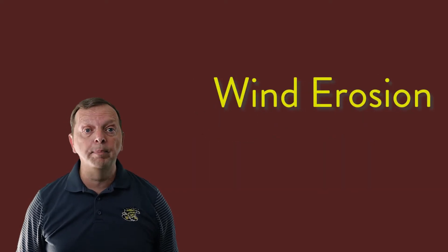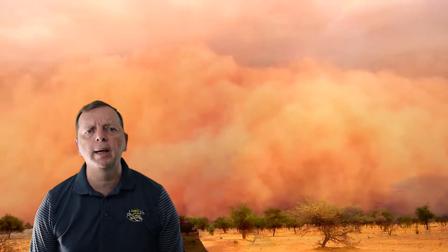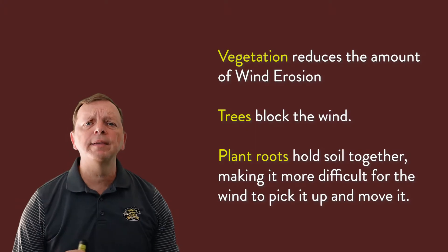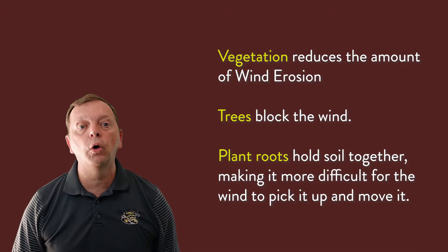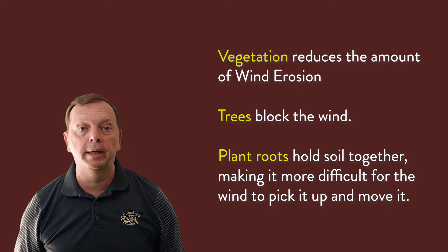If you've ever been outside and a big gust of wind blows sand in your eyes, quite frankly, that's wind erosion. Of course the wind has to be strong enough to pick up the sand, dust, or sediment. It's most common to find wind erosion in flat areas such as deserts and beaches, where the sediment is exposed and there isn't anything to block the wind. Areas with vegetation tend to have less wind erosion, because trees block the wind and the roots of plants hold onto the sediment, preventing the wind from picking it up and moving it.